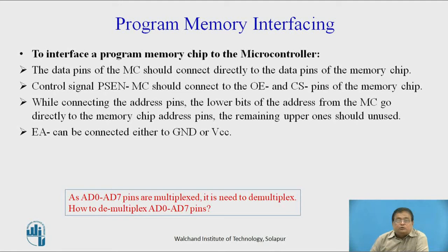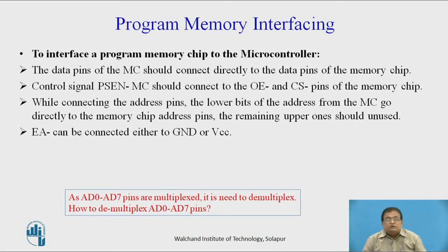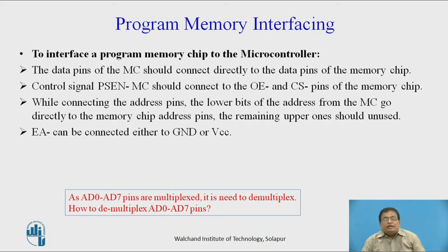To interface a program memory chip to the microcontroller: the data pins of the microcontroller should connect directly to the data pins of the program memory chip. The control signal PSEN bar from the microcontroller should connect to OE bar, and we can also connect it to CS bar to select the memory chip. While connecting the address pins, the lower bits of the address from the microcontroller go directly to the memory chip address pins, and the remaining upper bits should be unused. EA bar can be connected either to ground or to VCC as per our requirement.